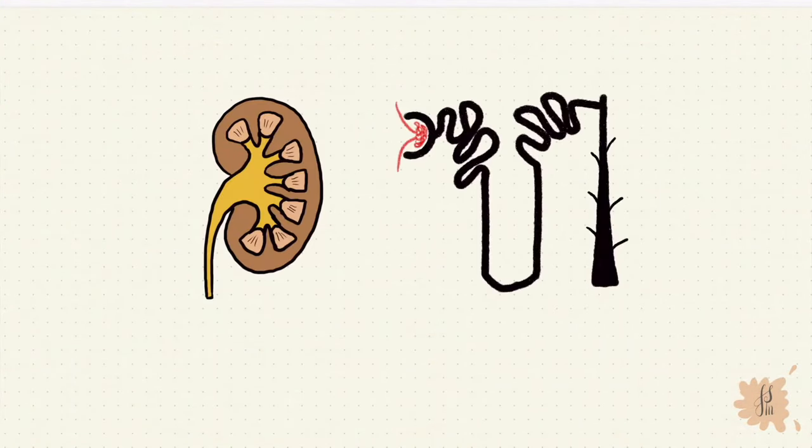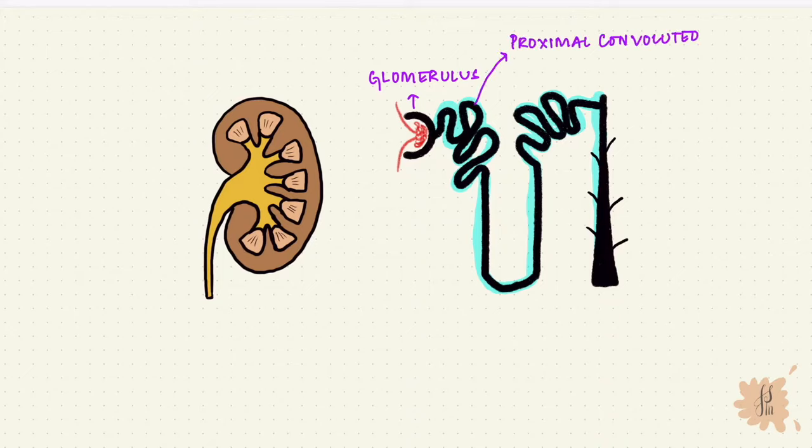The kidney has millions of nephrons and each nephron has a glomerulus and a renal tubule. The first part of the renal tubule is the proximal convoluted tubule, which then leads into the loop of Henle, the distal convoluted tubule and finally the collecting duct.